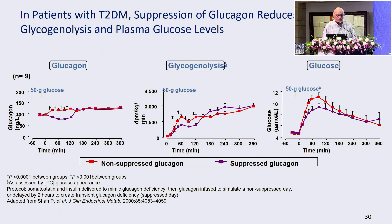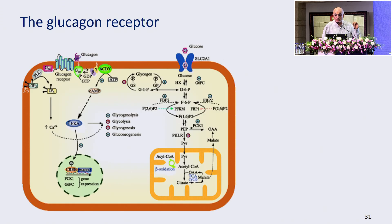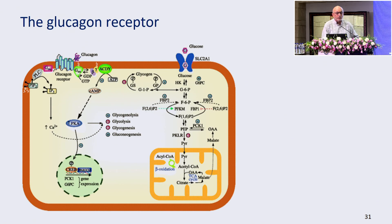There is reduction in glycogenolysis and plasma glucose is affected. It's not just glucagon — there is also the glucagon receptor. You can't really modulate glucagon because if you shut it off in the pancreas, it's made in the intestine. You shut it off in the intestine, it's made somewhere else. So the only way to modulate glucagon is to work at its receptor. That's what GLP-1 receptors and others do.